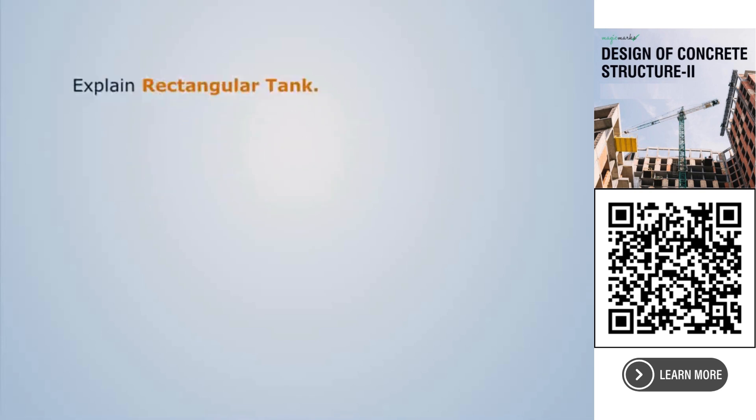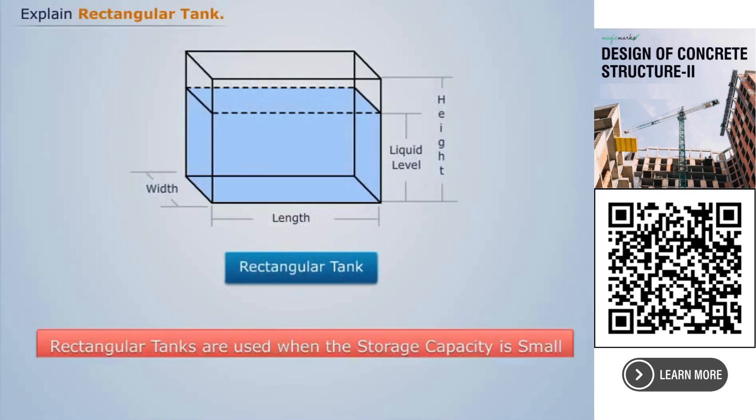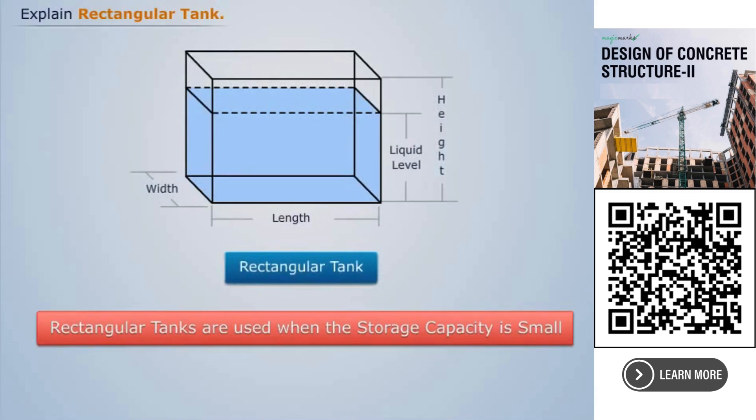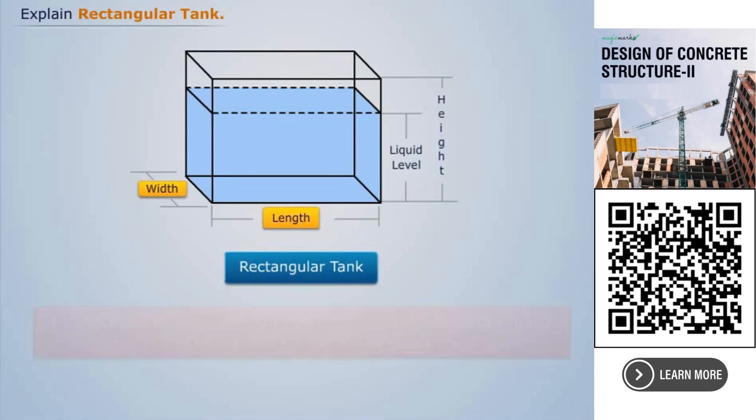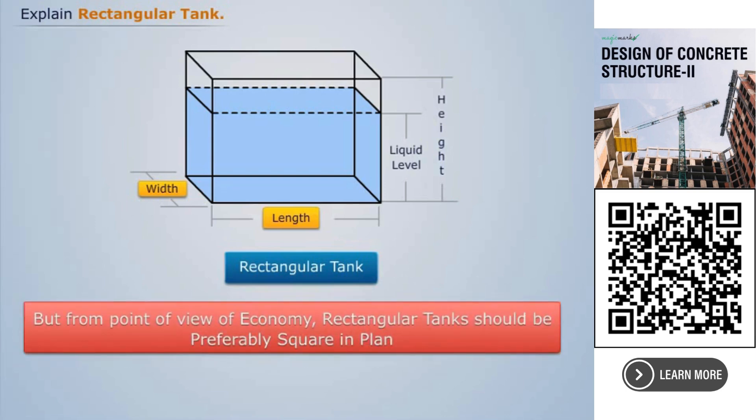Explain the rectangular tank. Rectangular tanks are used when the storage capacity is small. It is additionally alluring that more drawn-out side ought not be more noteworthy than double the littler side.